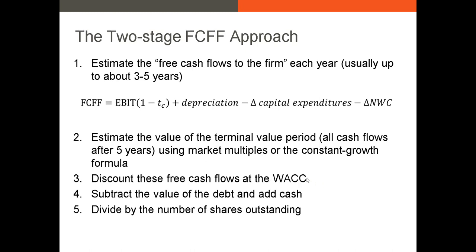Since free cash flows to the firm go not just to shareholders but also to bondholders and preferred shareholders, we need a discount rate reflecting the cost of raising money for all those parties. After that, to isolate cash flows going to shareholders, we subtract out debt and add cash. If there's preferred stock, we'd subtract that out too. Finally, we divide by shares outstanding to get an intrinsic share price.